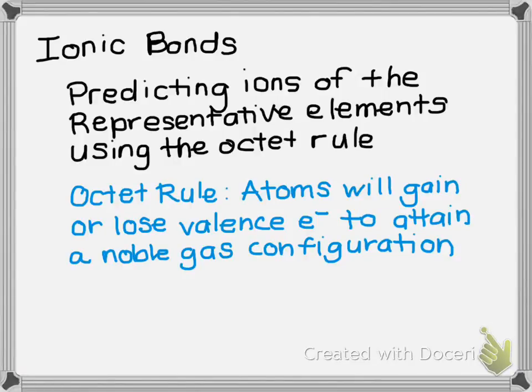Ionic bonds are formed from the electrostatic attraction between positive and negative ions. When we're talking about ionic bonds, we need to be able to predict the ions that will form.